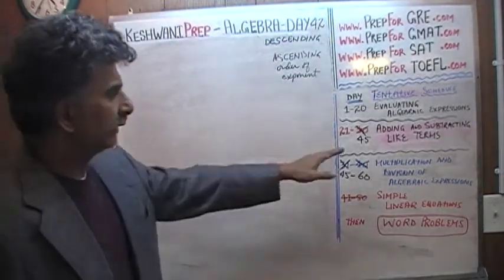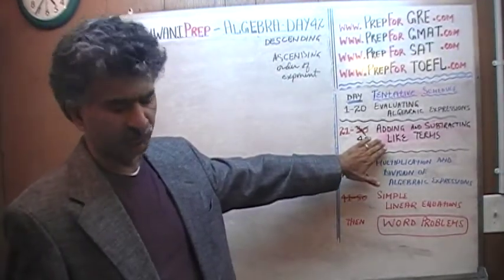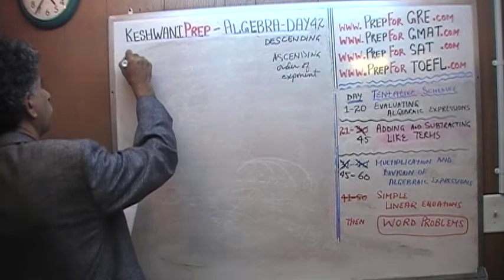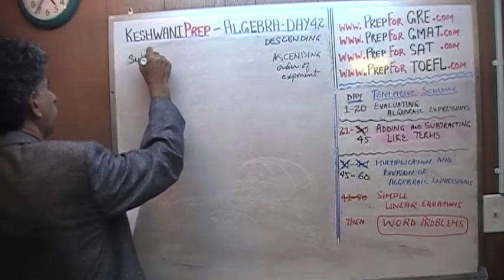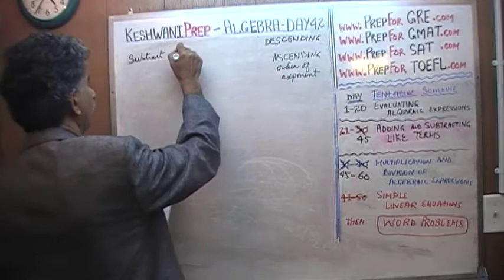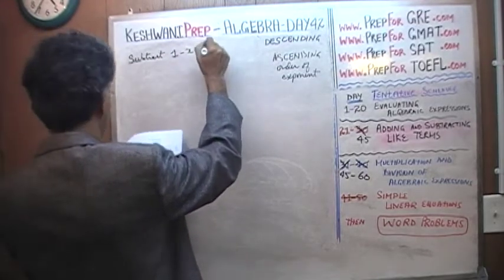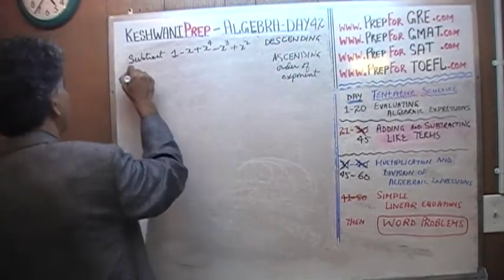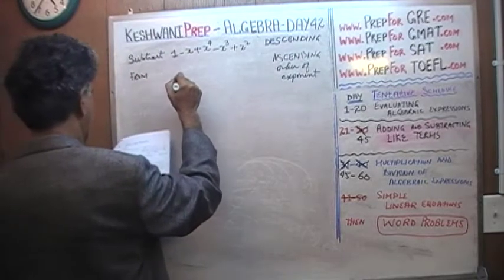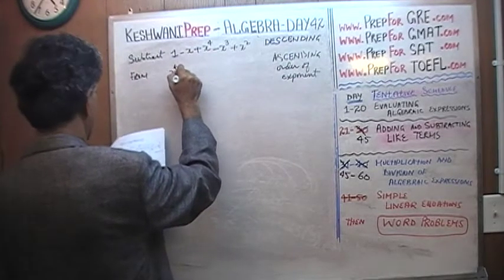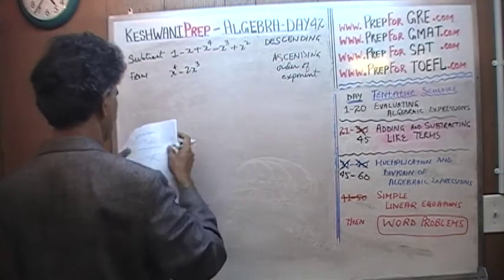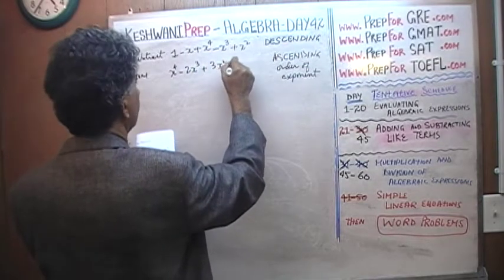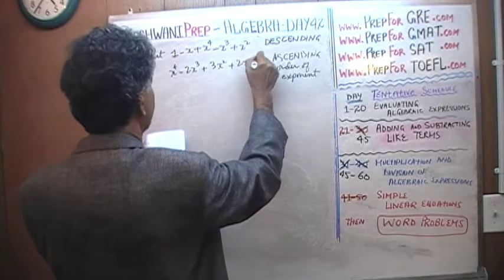Here's the problem for today. We're learning right now how to add and subtract algebraic expressions. Here's the problem. We are told to subtract 1 minus x plus x to the fourth minus 2x cubed plus 3x squared plus 2x plus 5.